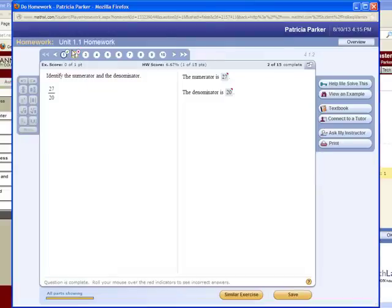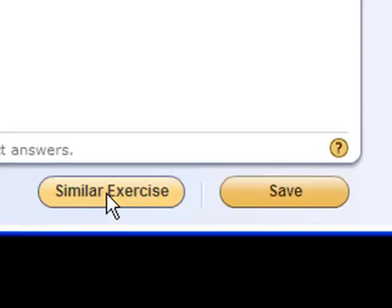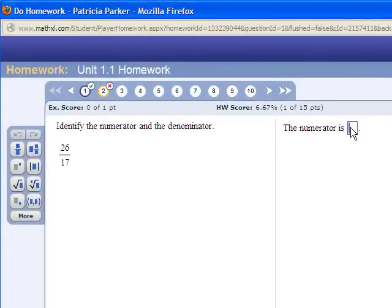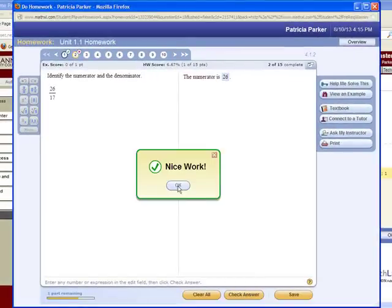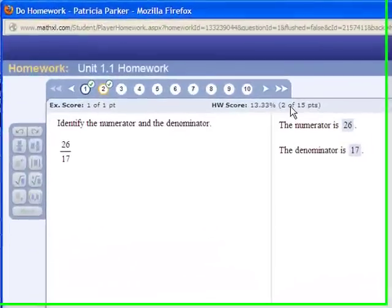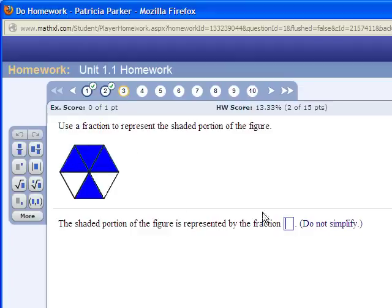When you get an answer wrong after three tries you can click on similar exercise down below. Notice we got a different problem of the same type. Now I'm going to put my answers in and get them right and watch what happens to the x and to my score. The x became a check and the score went up to 2 out of 15 correct. So for each problem you get three attempts to enter the answer to the question and then if you get it wrong after three attempts then you may ask for a similar exercise and with the opportunity to get it right again.